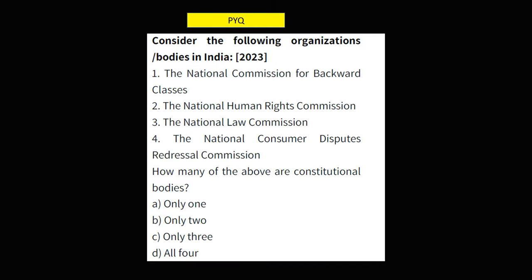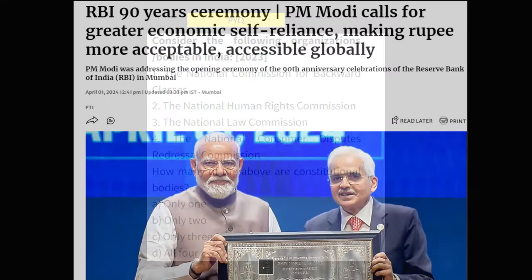In the 2023 prelims, UPSC asked: Consider the following organizations — the National Commission for Backward Classes, the National Human Rights Commission, the National Law Commission, and National Consumer Disputes Redressal Commission. How many of them are constitutional bodies? The answer was only one — the National Commission for Backward Classes is a constitutional body. The NHRC is a statutory body, the National Law Commission is also a statutory body, and the NCDRC is an executive body.